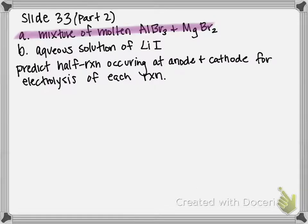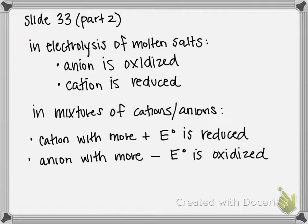The first example is a mixture of molten aluminum bromide and magnesium bromide. To start solving this, we need to figure out what can undergo oxidation and what can undergo reduction in this molten mixture. As stated, in a molten salt mixture, the anion is oxidized and the cation is reduced.